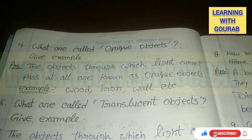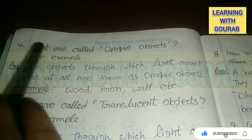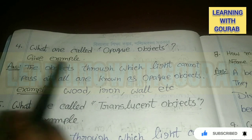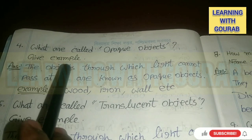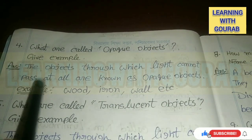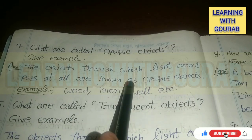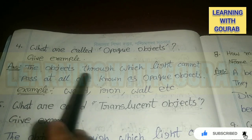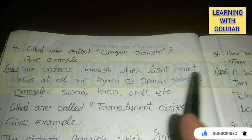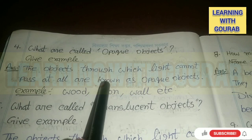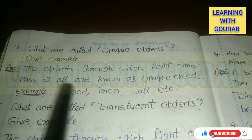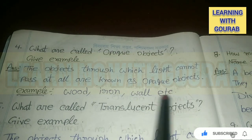Next question: What are called opaque objects? Answer: Objects through which light cannot pass at all are known as opaque objects. For example: wood, iron, wall, etc.